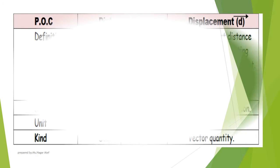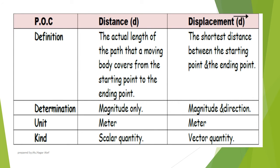From the previous examples, we conclude that distance is the actual length of the path that a moving body covers from the starting point to the ending point, which is determined by magnitude only. Its unit is meter, and its kind is scalar quantity.